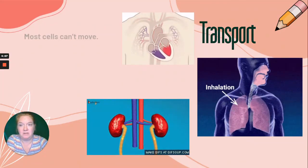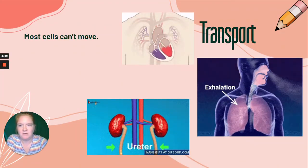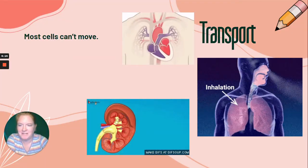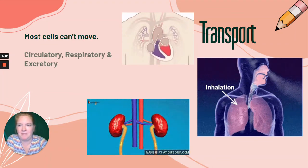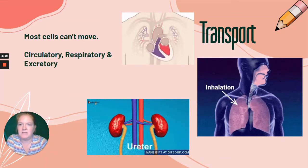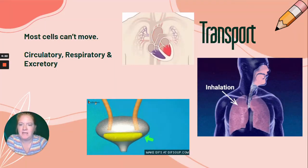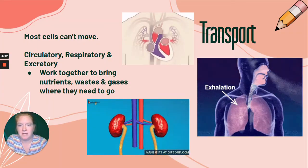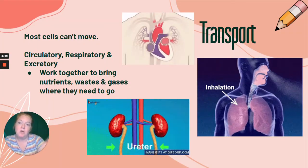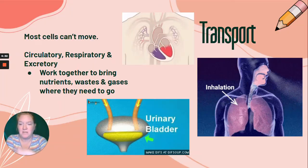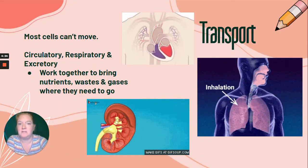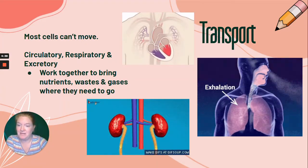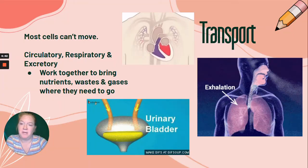Now, transport. Most cells don't move — they can't move. Your skin cell in your arm can't move next to your stomach to get nutrients. So transport relies on the circulatory, the respiratory, and the excretory system. All three work together to bring nutrients, wastes, and gases where they need to go. It solves the problem of cells not being able to move around and get what they need — we bring it to the cell instead.